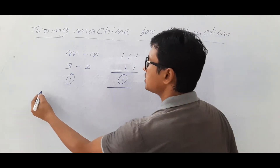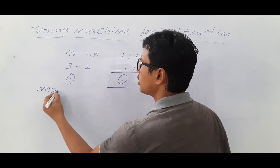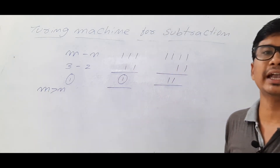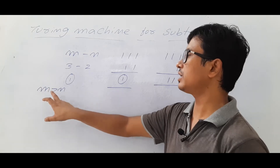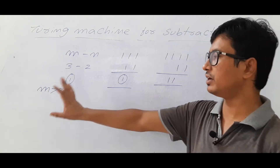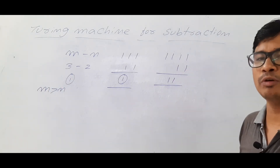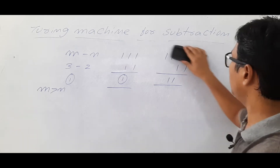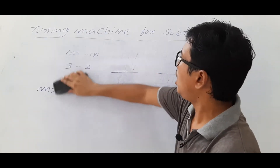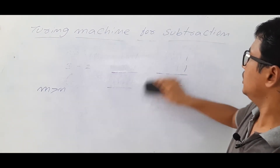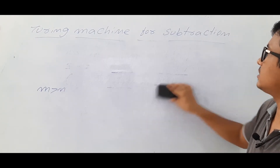What I want to perform is subtraction for the case where m is always greater than n. So I want to design a Turing machine for performing subtraction only when the m value is greater than n. Now we will see how I can represent the input on the tape.